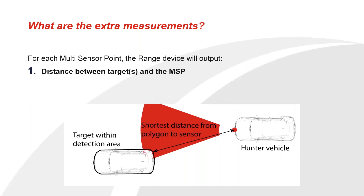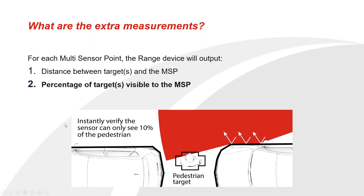Now we'll look at the extra measurements you get when you have multi-sensor points configured. The first measurement is the distance from that multi-sensor point to the target polygon within its field of view - so from wherever that point is on the vehicle to the closest part of the target polygon. The second measurement is the percentage of target which is visible to that multi-sensor point. This is why you need polygons set up - so that you can have a section of them visible for the multi-sensor point to pick up. In this example you can see only a fraction of this pedestrian target is in view of the multi-sensor point.